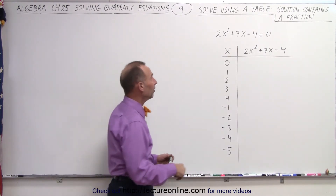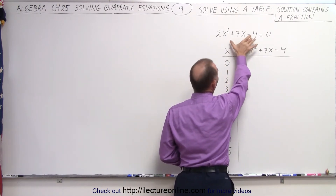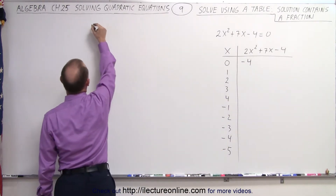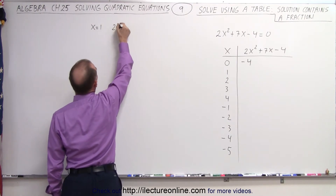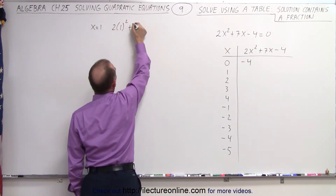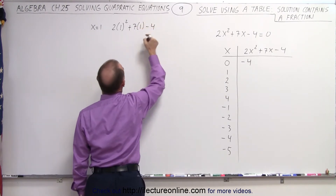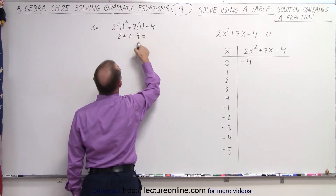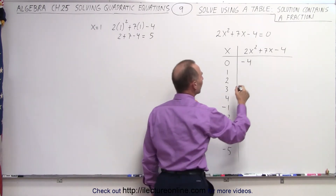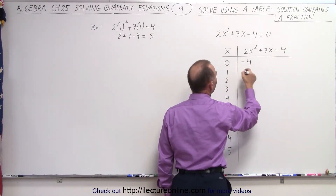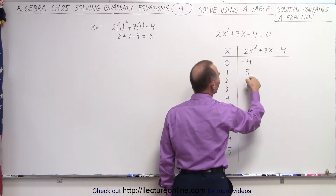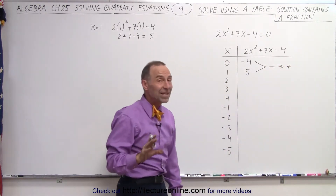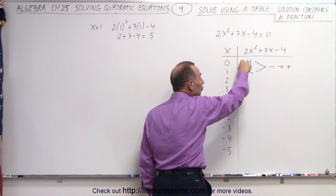Starting with x=0 is easy enough. Plugging in 0 for x, we get the left side equal to negative 4, so that is definitely not a solution. How about x=1? We have 2 times 1 squared plus 7 times 1 minus 4, which gives us 2 plus 7 minus 4, equal to 5. Notice something interesting: we went from 0 to 1, from a negative value to a positive value. There is a transition from negative to positive, which means there may be a solution hidden between these two values.